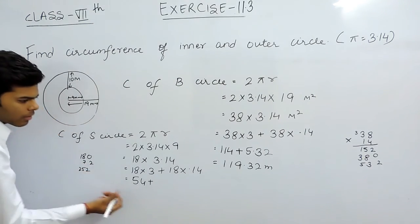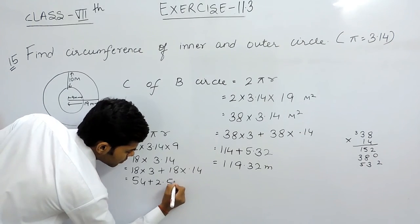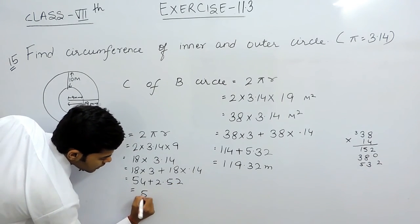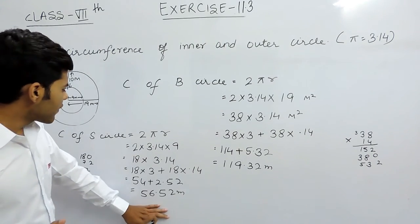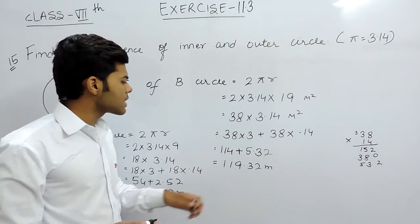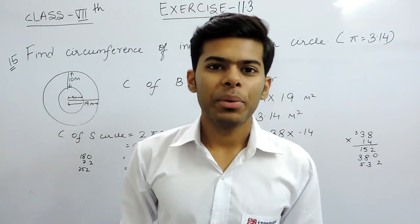So this is the circumference of smaller circle and this is the circumference of the bigger circle. This is how we can solve this question. Thank you.